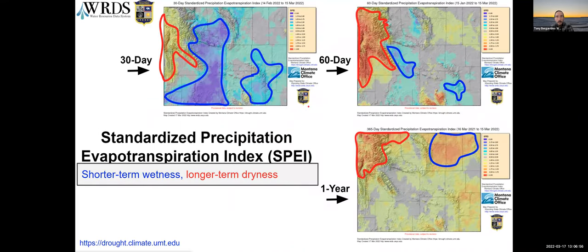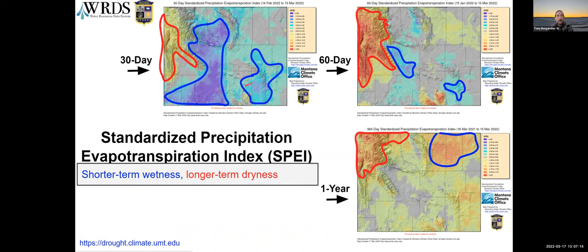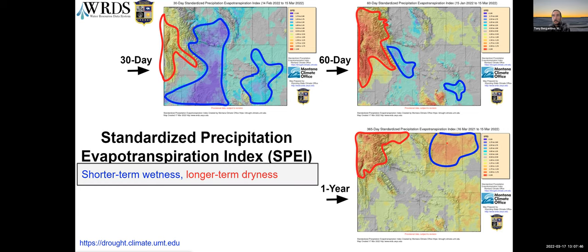This is the standardized precipitation evapotranspiration index, similar to the standard precipitation index but with an added evapotranspiration component. The area of wetness shows up at the 30-day timescale, while dryness appears on the western side of the state. Moving clockwise to the 60-day and one-year representations, the northwest area stands out at all timeframes. At longer-term periods, we're seeing long-term precipitation deficits in the northwest and northeast, which shows up as a very red area on the drought monitor map.